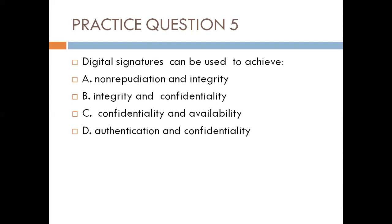Question five. Digital signatures can be used to achieve: A. Non-repudiation and integrity, B. Integrity and confidentiality, C. Confidentiality and availability, D. Authentication and confidentiality. Digital signatures achieve integrity, authentication, and non-repudiation. This is why they are used in email systems. That leaves us with A — non-repudiation and integrity. The third property is authentication. So A is our answer. B, C, and D are not correct.